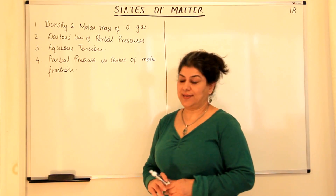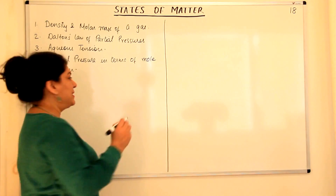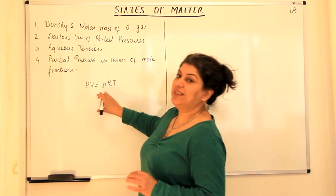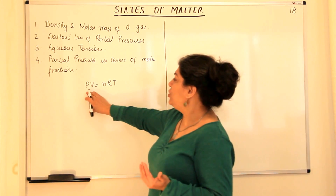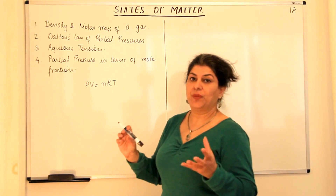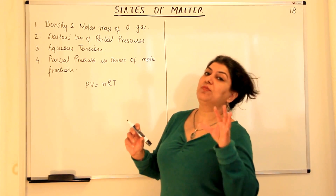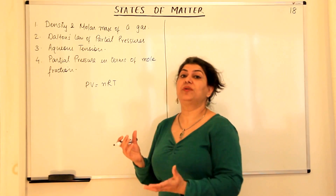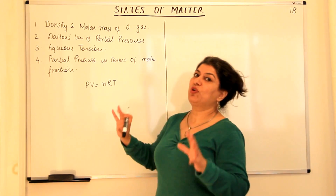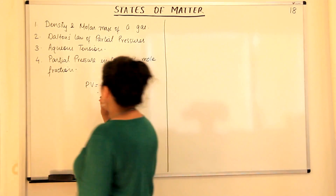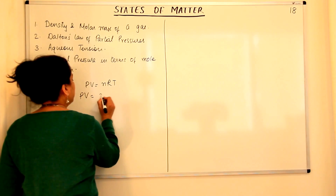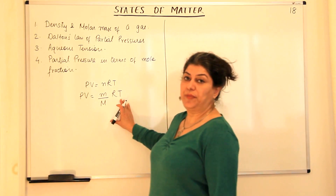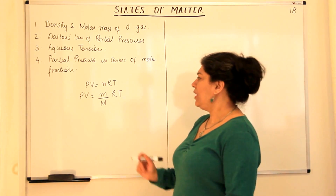Density and molar mass of a gas. We know that the ideal gas equation is PV = nRT. When we try to write the ideal gas equation in terms of density, we need to change number of moles to what it stands for. Number of moles is mass of the gas divided by the molar mass of the gas. Whatever the gas is, whatever quantity you have, if you divide that mass by the molar mass, you will get the number of moles. So we can write PV = (m/M)RT, where R is the gas constant, T is the temperature in Kelvin, P is pressure and V is the volume.